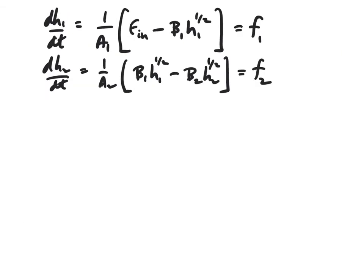To find the elements of the B matrix we take the same approach, but recognize that we're taking the partial derivatives with respect to the inputs. In this case we only have one input, the volumetric flow rate Fn.